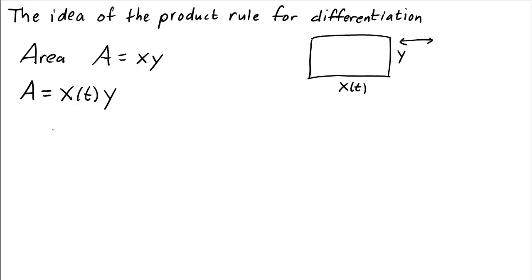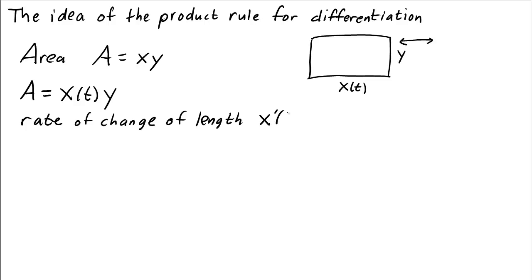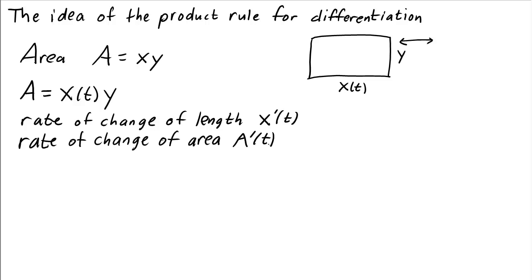What we want to calculate is the instantaneous rate of change of the area. The instantaneous rate of change of the length is the derivative of x, x prime of t. The instantaneous rate of change of the area would be a prime of t. Since the height of the rectangle is fixed at y, the rate of change of the area is just the rate of change of length times the height y.